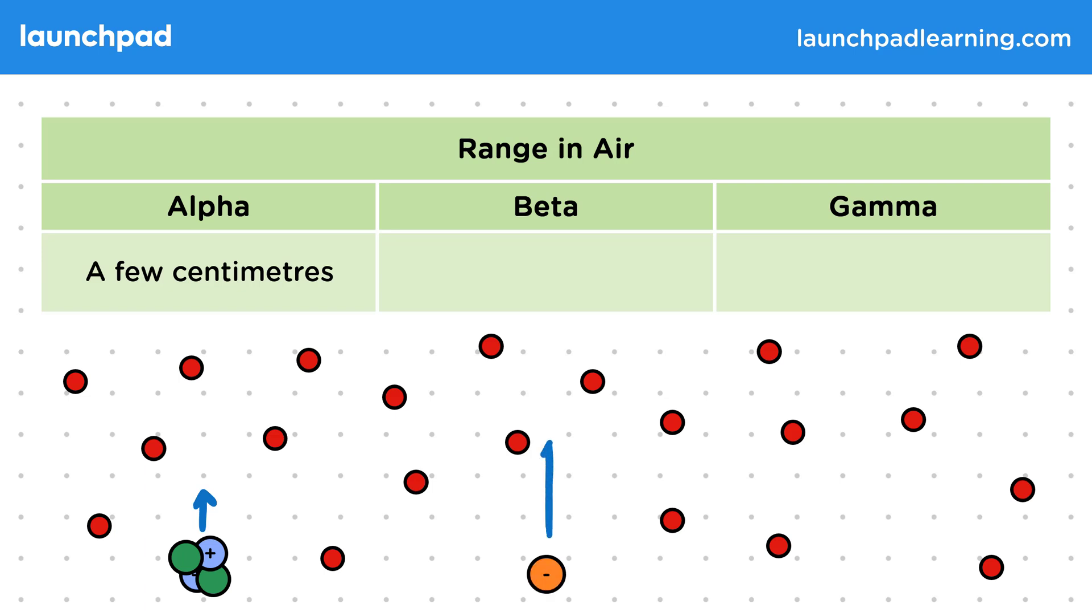Beta radiation can travel a little further, approximately a few metres, as it interacts with air only a little. Gamma radiation can travel the furthest as it barely interacts with air.